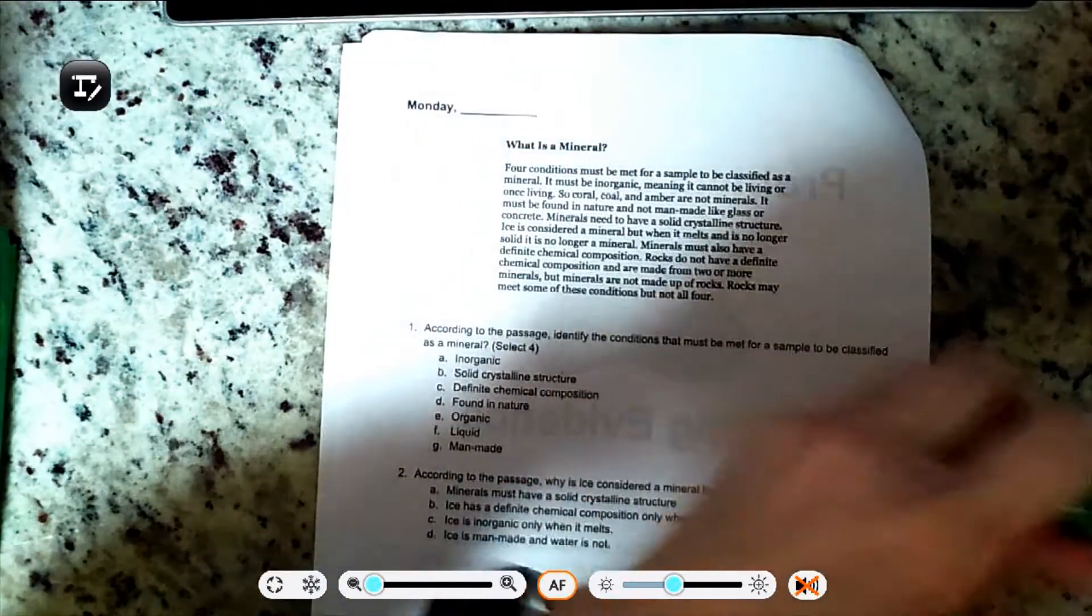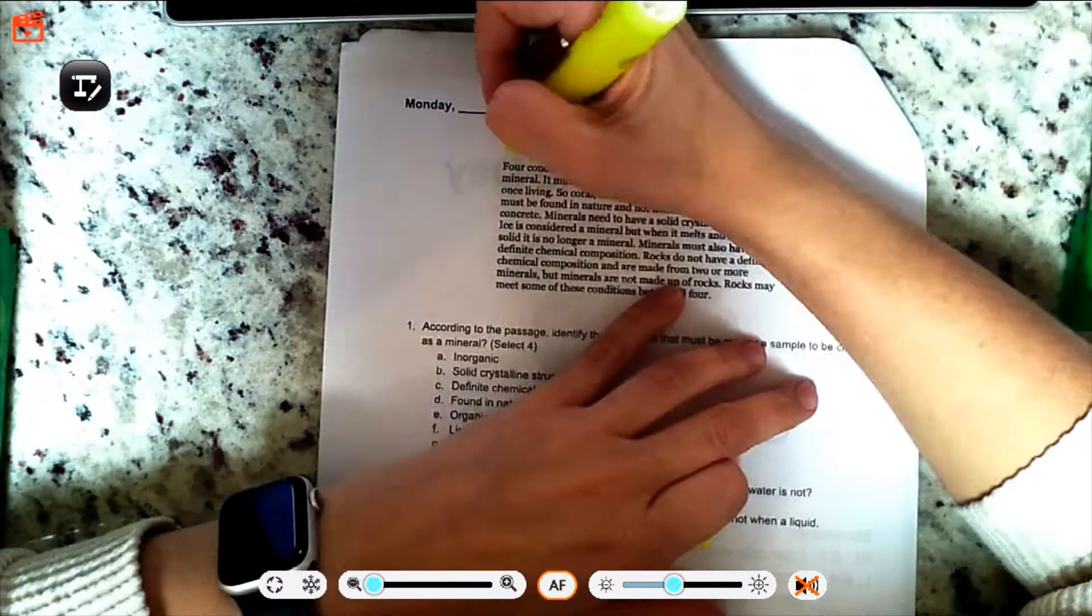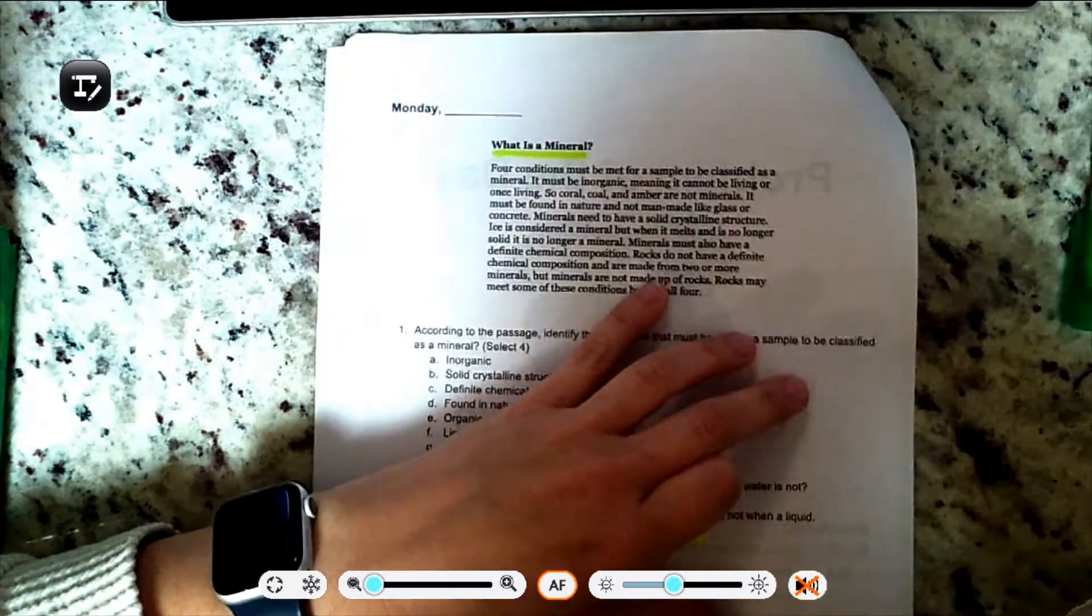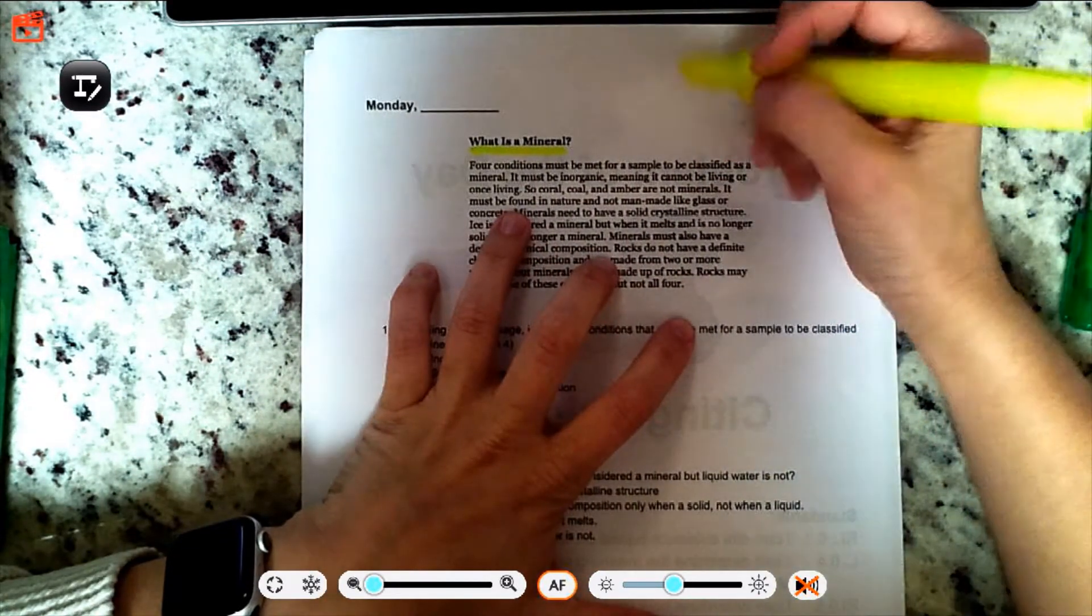Well, not that highlighter. A mineral. What is a mineral? Four conditions must be met. We've also read five, so I like five better, but it must be met for a sample to be classified as a mineral.